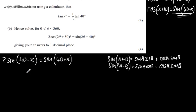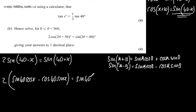So we're going to have 2 lots of sin(40)cos(x) - cos(40)sin(x), and that will be equal to sin(40)cos(x) + cos(40)sin(x). Expanding the bracket gives us 2 sin(40)cos(x) - 2 cos(40)sin(x) equals sin(40)cos(x) + cos(40)sin(x).